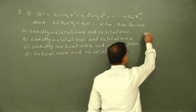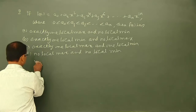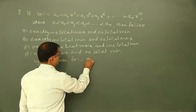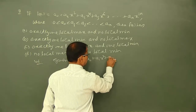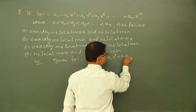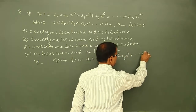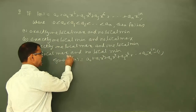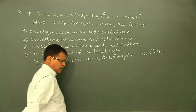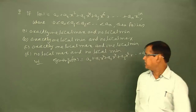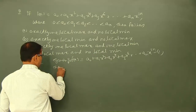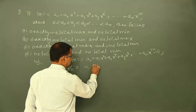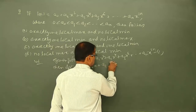Let's look at this problem. f(x) is given as a₀ plus a₁x² plus a₂x⁴ plus a₃x⁶ and so on plus aₙx²ⁿ. We can call this y, so y = f(x). Now we find dy/dx, that is f'(x): it equals a₁·2x + a₂·4x³ + a₃·6x⁵ and so on.